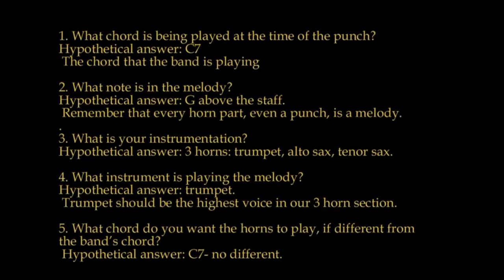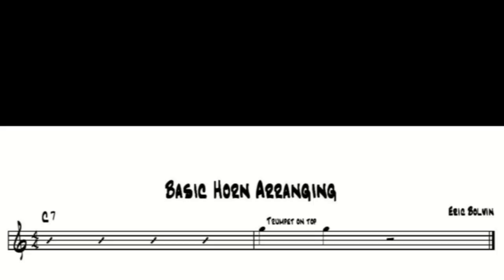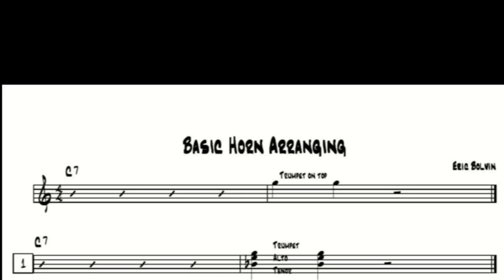Here's a quick review of our hypothetical situation: chord at time of punch — C7; melody note — G above the staff; instrumentation — three horns: trumpet, alto sax, tenor sax; instrument playing the melody — trumpet; chord for the horns — C7. The next thing we have to figure out is what notes we want the saxophones to play. We have the fifth of the chord, and the third and the seventh are the most functional notes of a chord. The third tells us if it's major or minor, and the seventh tells us the quality of the seventh. We could put in the root, but that's the bass player's job. So we're going to go with the third and the seventh.